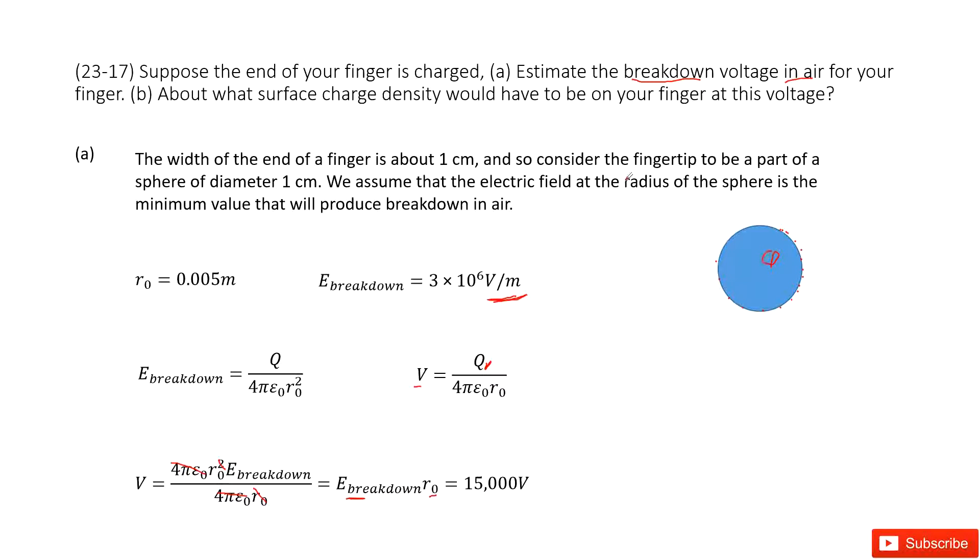We know the width of the end of a finger is about 1 cm, so the radius is just half of 1 cm. You input R₀ and E inside, you get the answer.